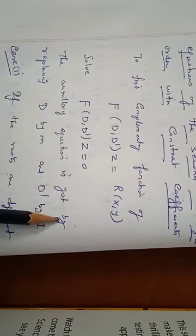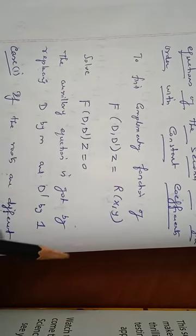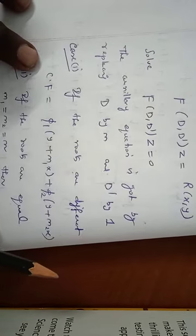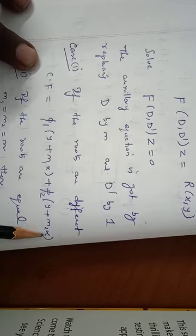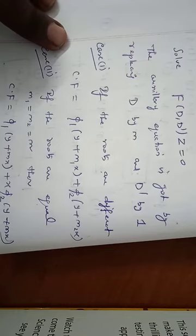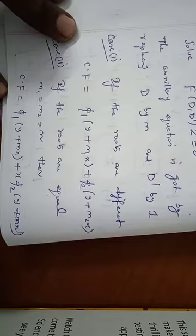The auxiliary equation is obtained by replacing D by m and D' by 1. Case 1: if the roots are different, the complementary function is CF = φ₁(y + m₁x) + φ₂(y + m₂x). Case 2: if the roots are equal, suppose m₁ = m₂ = m, then the complementary function is φ₁(y + mx) + x·φ₂(y + mx).